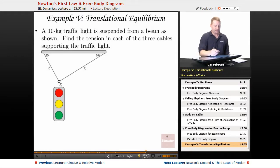Put all this together. We have a 10 kilogram traffic light suspended from a beam as shown. Find the tension in each of the three cables T1, T2, and T3 supporting the traffic light.